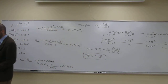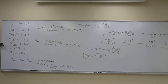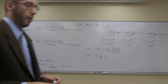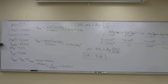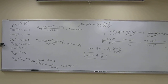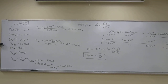So the pH went down from 9.25 to 9.18 after adding HCl — that makes sense. These are actually just the first two steps of a titration calculation.